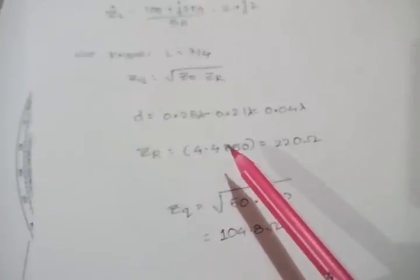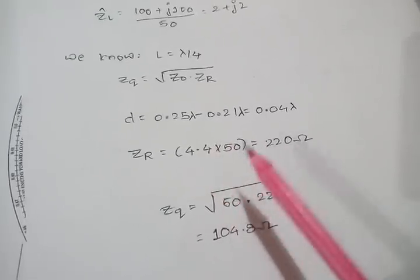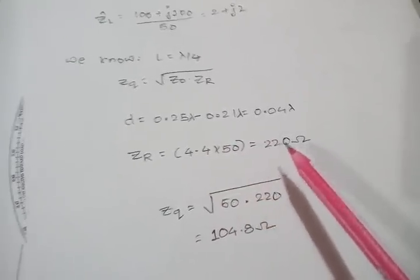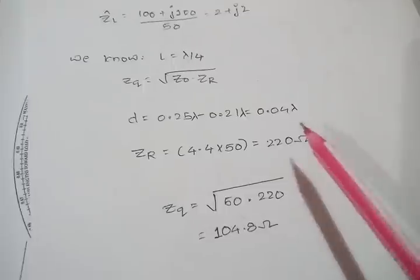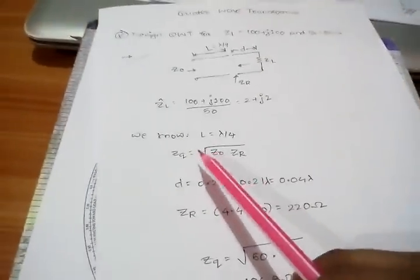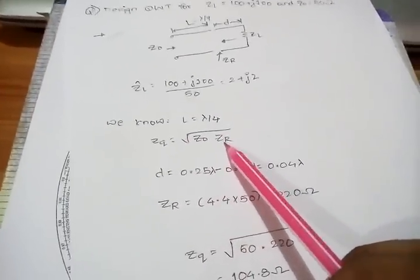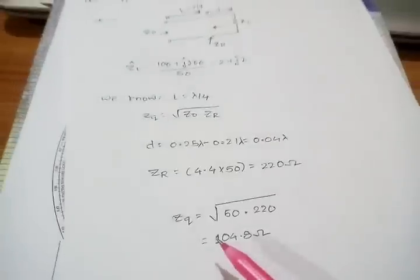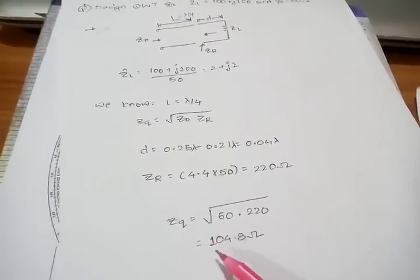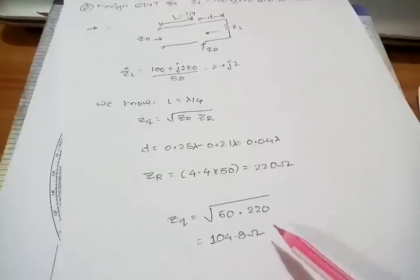On impedance chart I have got 4.4 but in real time I have normalized it, so I need to denormalize it by multiplying it by 50. Once I multiply it by 50, the value comes out to be 220 ohms. Now I have got the value of Z0, I have got the value of ZR. When I multiply I get the impedance as 104.8 ohms.